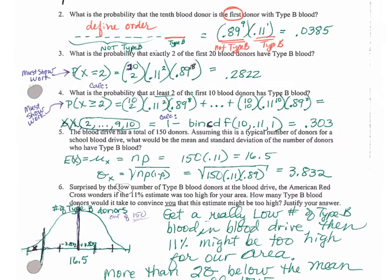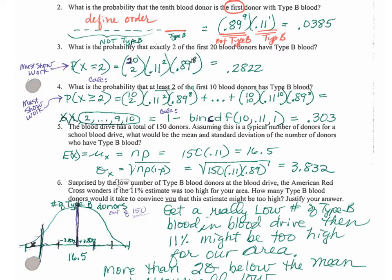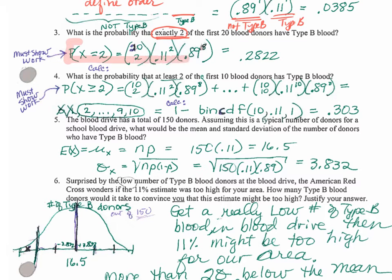Number 3 is saying that out of 20 we want exactly 2. Exactly this, exactly that — PDF is where it's at. So this one is going to be binomial PDF. You have to show this work; notice this section right here is the work that has to be shown. And then the part in your calculator you don't have to show, but here's what you would put in your calculator: binomial PDF of 20, 0.11, 2.